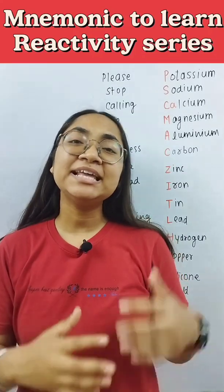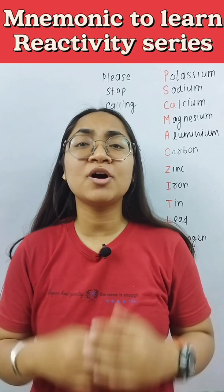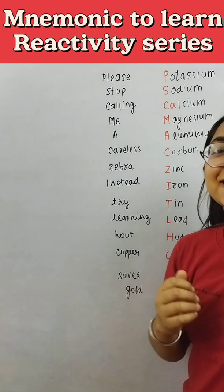We all have a problem with the reactivity series. There is a small mnemonic that you can use for the reactivity series, which is: Please stop calling me a careless zebra, instead try learning how copper saves gold.